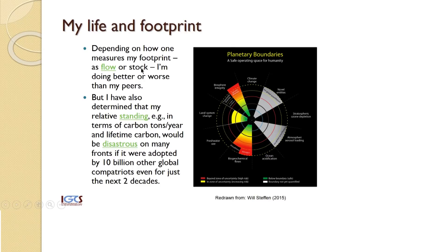One needs to know how one is doing — am I doing better or worse than my peers? What is my relative standing in terms of, say, carbon tons per year and lifetime carbon? And what would happen if everybody on a planet with 10 billion humans by the 2050s adopted my footprint? Clearly, we would be exceeding all of these planetary boundaries if that were the case.